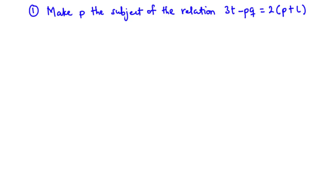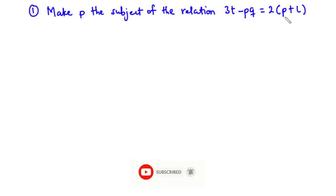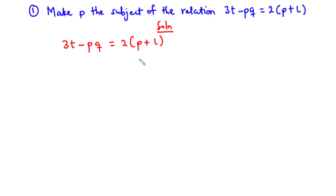For example one: make p the subject of the relation 3t minus pq equals 2 times p plus l. We write down the relation: 3t minus pq equals 2 times open bracket p plus l close bracket. We are going to make p stand alone.